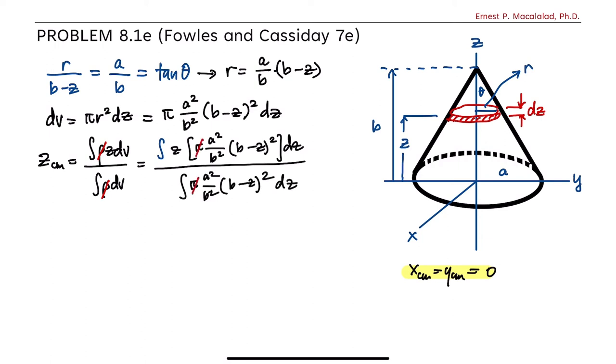So again, pi can be cancelled. Expanding this and then doing the integration from 0 to b, because remember that this z will vary from 0 all the way to b. So after simple integration, the result would be 1 half b squared z squared minus 2 thirds b z cubed plus 1 fourth z to the fourth. And this is integrated from 0 to b.